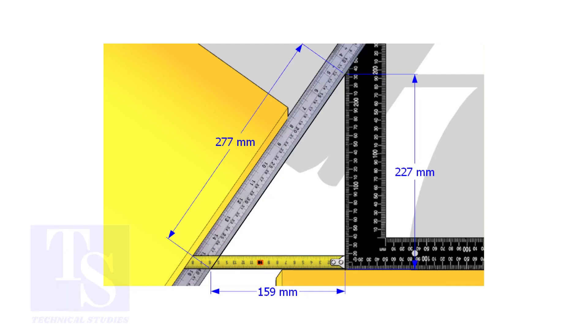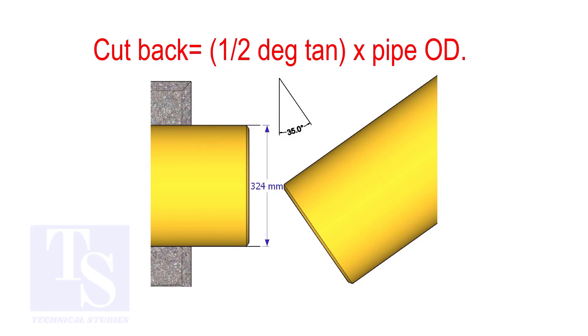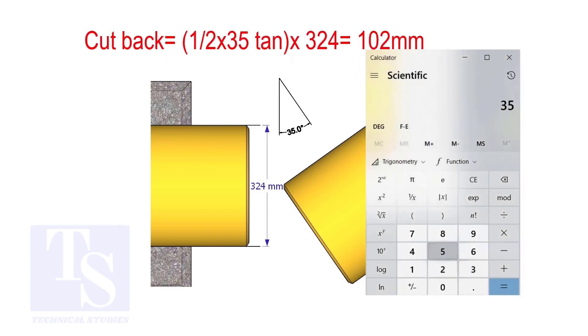How to calculate the cutback of a single cut miter. When it is a single cut, the cutback is half degree tan multiplied by the OD of the pipe. The answer is 102 millimeters.